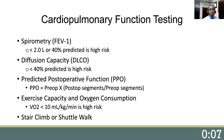An alternative measurement of pulmonary function is exercise capacity and measurement of oxygen consumption. The VO2 max of less than 10 milliliters per kilogram per minute is considered a high-risk patient. A functional test that can be utilized in the clinic is the stair climb or the shuttle walk. The clinician can escort the patient walking up a couple flights of stairs and measuring their pulse oximetry during this exercise.